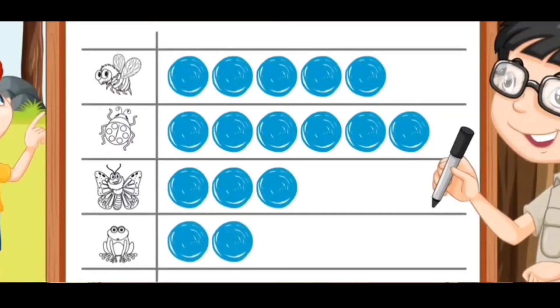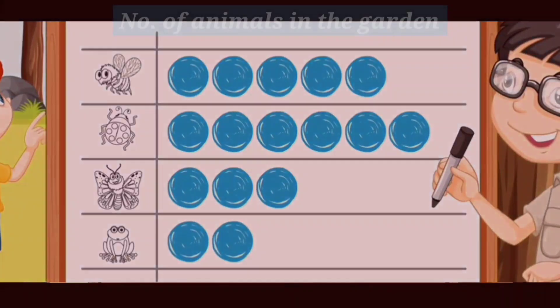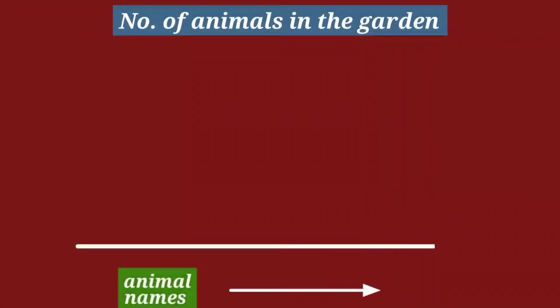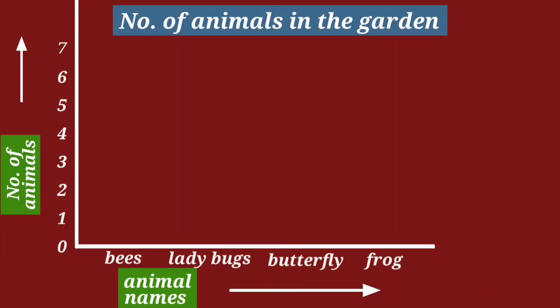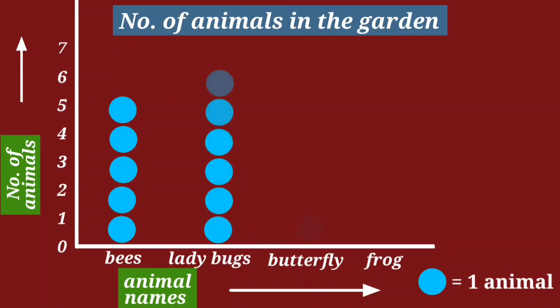Here we have shown data horizontally. The same data can be represented vertically. For that, let us write name of animals on one axis and their numbers on other axis. We will take 1 circle equal to 1 animal. And as we did earlier, using this symbol, we will represent number of animals vertically.